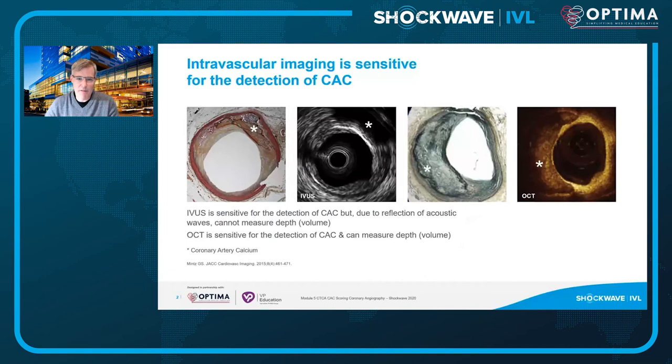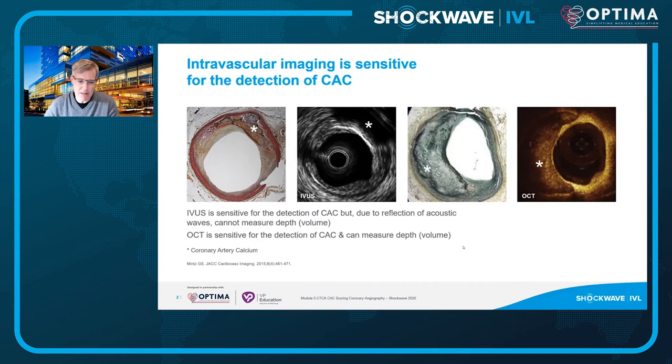Our final guest today is Kevin Crouse, who'll be talking us through the role of OCT in the evaluation of coronary artery calcium with some insights from the DISRUPT CAD-3 study. Intravascular imaging is well accepted as very sensitive compared to angiography for the detection of coronary artery calcium. IVUS and OCT are both able to characterize calcium much better than angiography, and unlike IVUS, OCT is able to give us information about the thickness of calcium. Understanding calcium burden, thickness, and length has really been a new development transforming our approach to treating PCI patients with significant calcium.